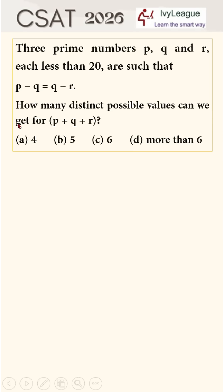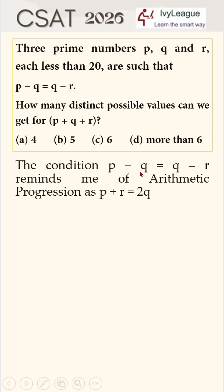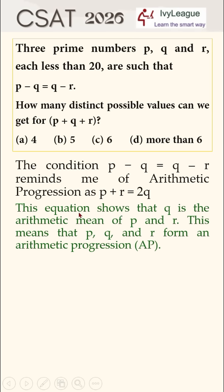This question is actually not a question of number systems. This condition p minus q is equal to q minus r reminds me of arithmetic progression, as p plus r is equal to 2q. This equation shows that q is the arithmetic mean of p and r.